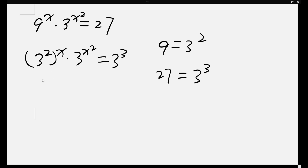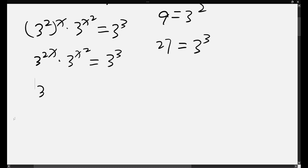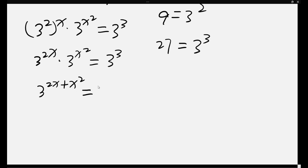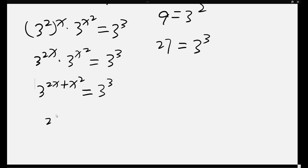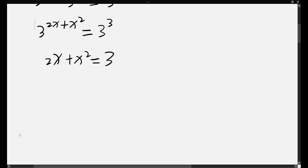So here 3^(2x) times 3^(x²) equals 3 cubed. Because the base is the same, we can add the exponents: 2x plus x² equals 3. The left side and right side have the same base, so the exponents must also be the same.